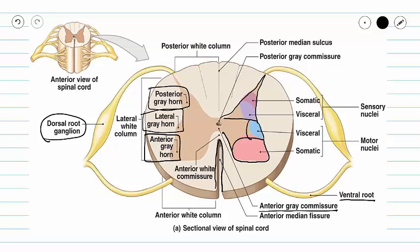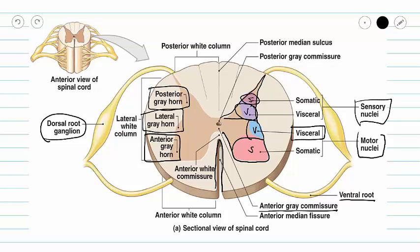Our posterior gray horn is going to house somatic and visceral sensory nuclei. Our lateral gray horn houses visceral motor nuclei, and our anterior gray horn houses somatic motor nuclei.